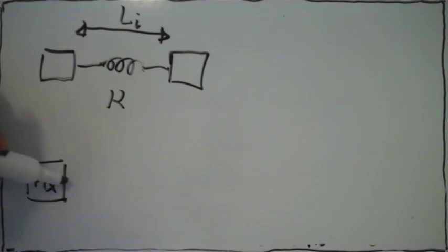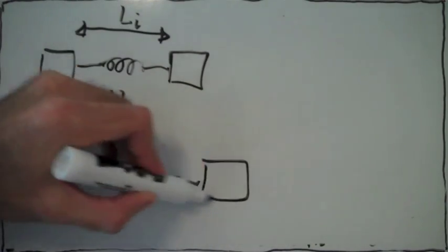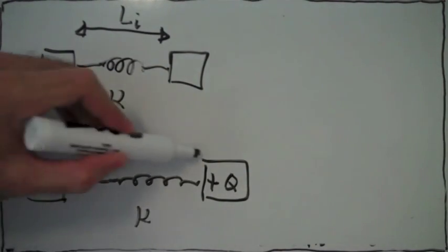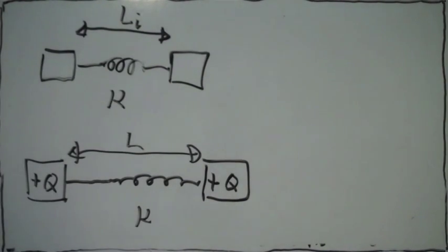We put a charge on each block, a charge of positive q. The electrical repulsion between the charges stretches the spring to a new length, l.